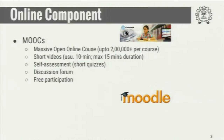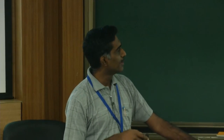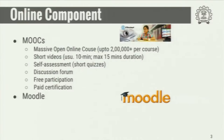Usually, participation in MOOCs is free — anybody can register and join. Only if you want a certificate of course completion do you need to pay. You can get registered for courses throughout the world. A typical cost in the US would be something like 25 dollars per course. So that is MOOCs — one portion.